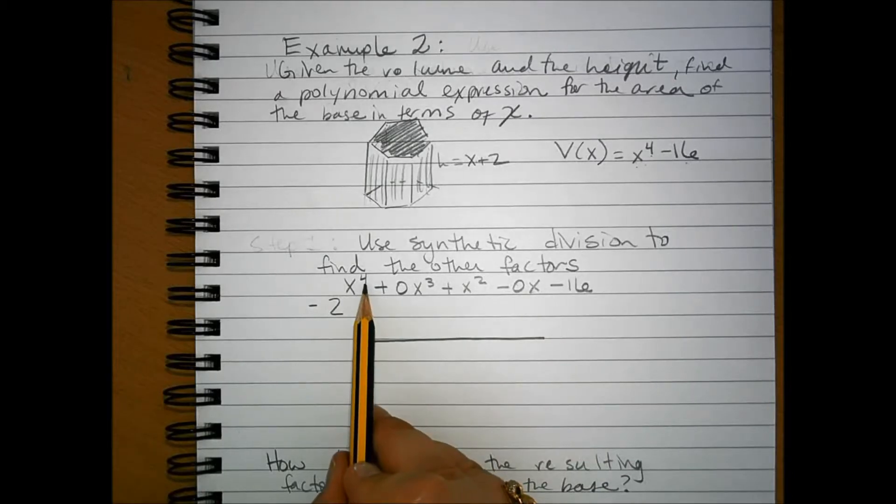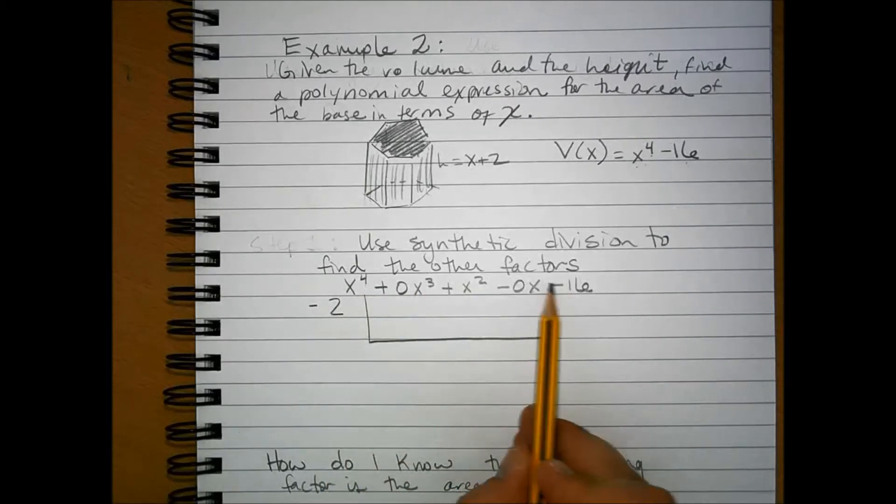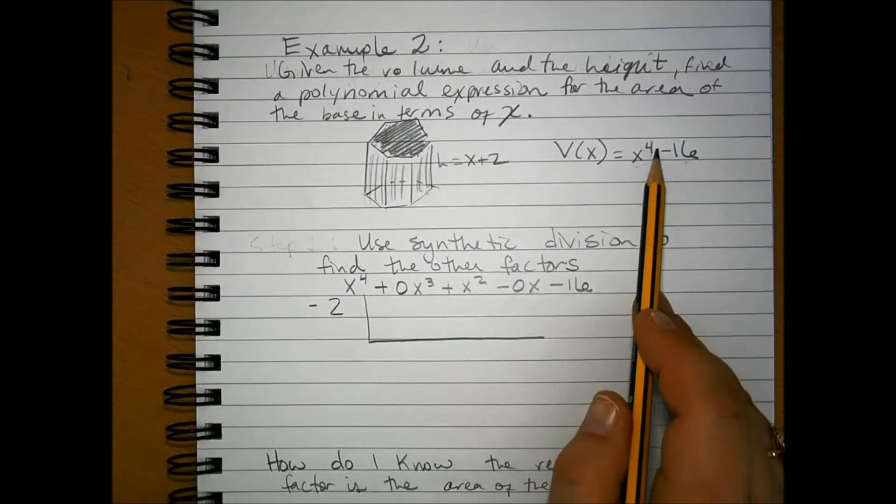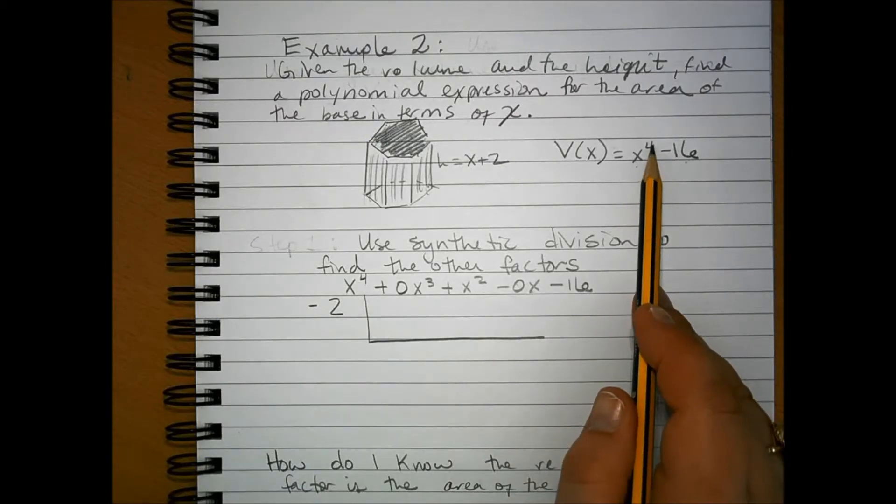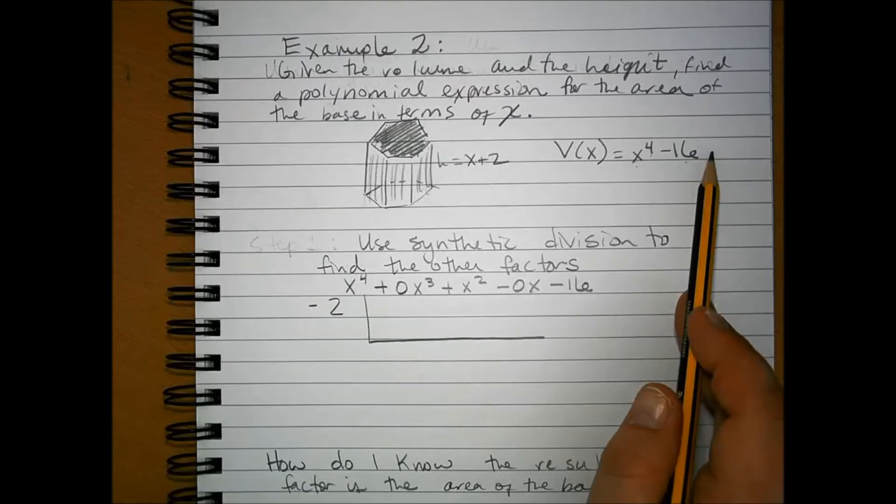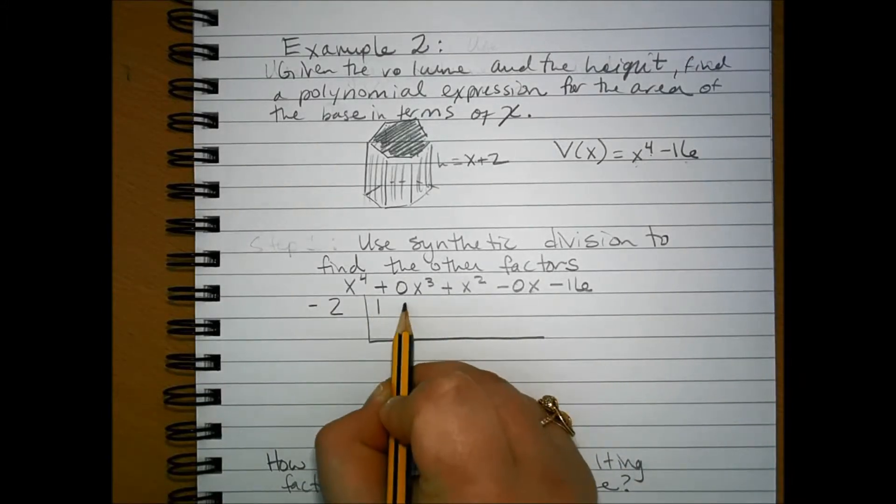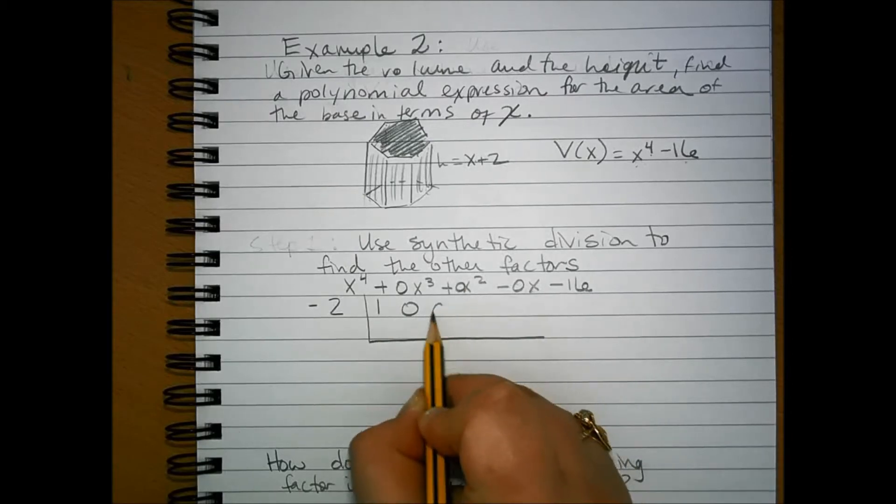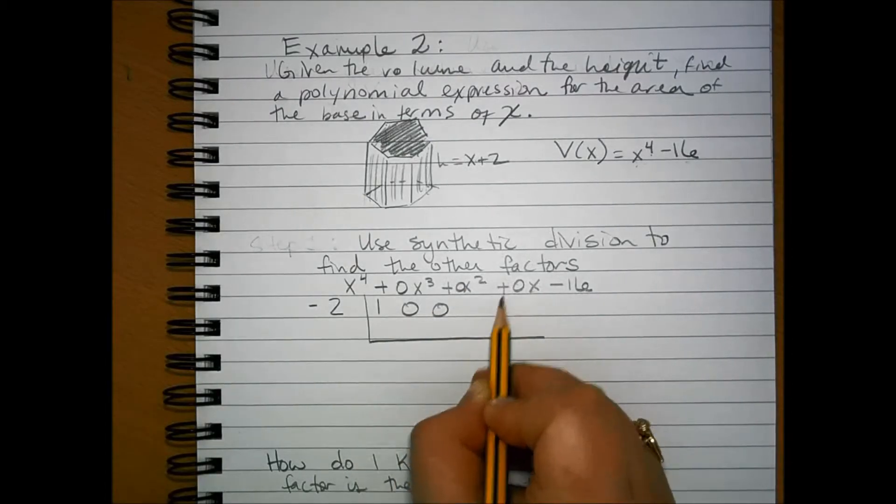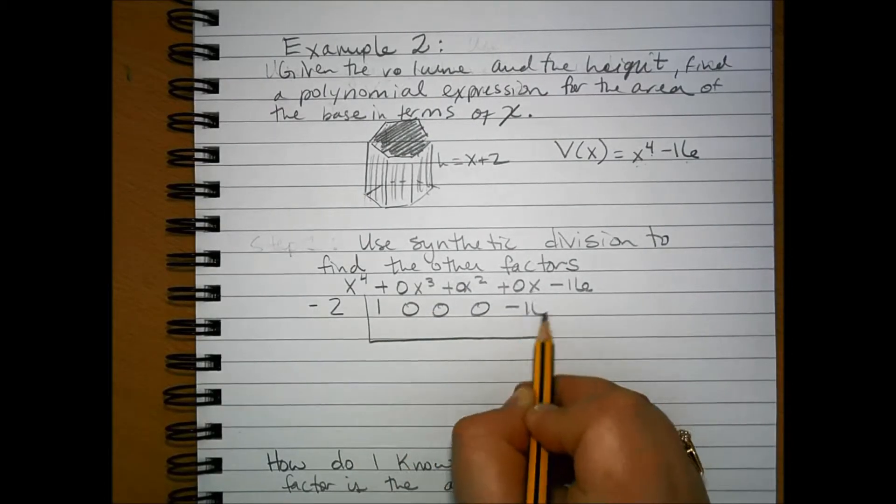So, now I know that I have 4, 3, 2, 1, and 0. The original polynomial only had an exponent with a degree of 4, and an exponent with a degree of 0. So, now I can fill in my synthetic division with 1, 0, 0, negative 16.